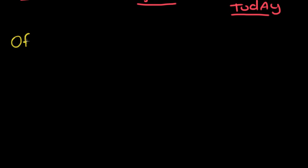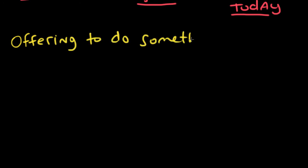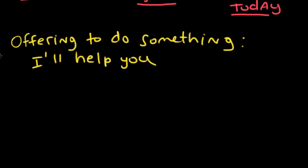What kind of situations do we use 'will' in? We use 'will' when we are offering to do something. For example: 'I'll help you with your homework.' That's an offer. We also use 'will' when we are agreeing to something.